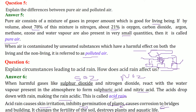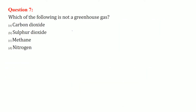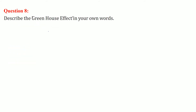Which of the following is not a greenhouse gas? Nitrogen is not a greenhouse gas. Carbon dioxide, sulfur dioxide, and methane are all greenhouse gases. Now let us describe the greenhouse effect in our own words.